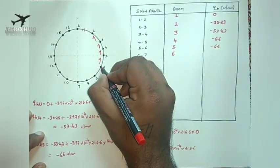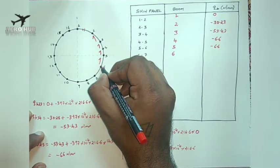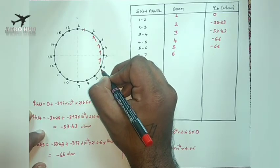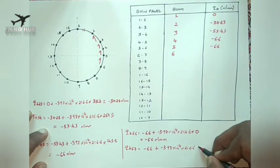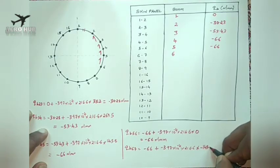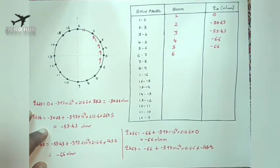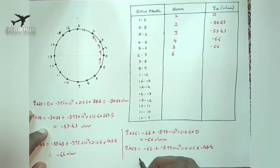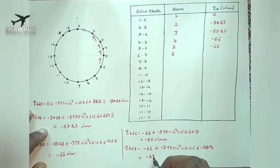Boom number 6 is at a distance of 145.8 from the neutral axis. Since boom number 6 is below the neutral axis, I write this as minus 145.8. So I will be getting an answer of minus 53.43 for QB6,7.